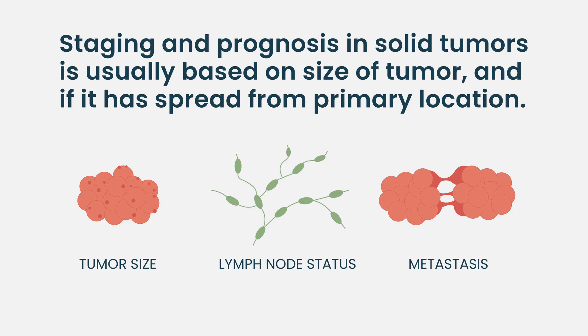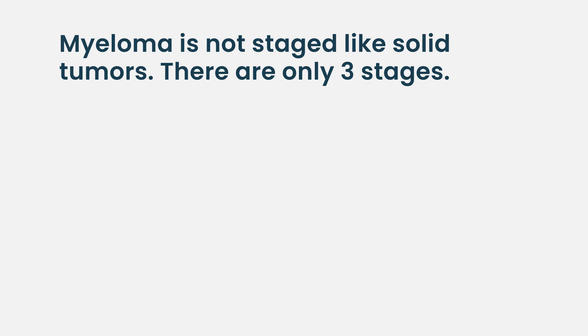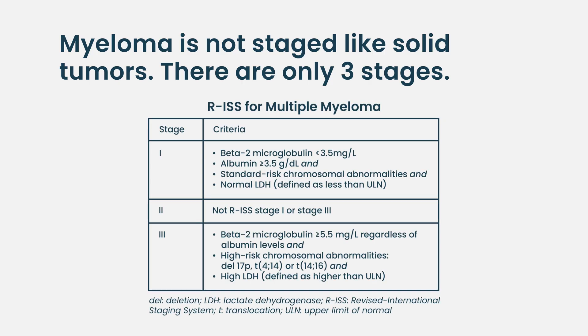Myeloma is very different from solid tumors like breast cancer or lung cancer. In solid tumors, staging goes from stage 1 to stage 4 — stage 1 tumors are simply removed by surgery or radiation, stage 4 typically gets chemotherapy, and stages 2 and 3 involve some combination. Myeloma does not behave that way.